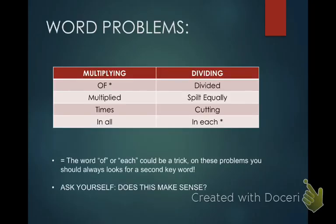We're going to talk about multiplying and dividing right now. Here's a list — you guys should have this already, we've already talked about it. You should have it saved somewhere in your notes. For multiplying, some of the words are: of, multiplied, times, in all. For dividing, it could be: divided, split equally, if you cut something, or in each. You'll notice there's two of them — of and in each — that have stars next to them, because those could be tricky.